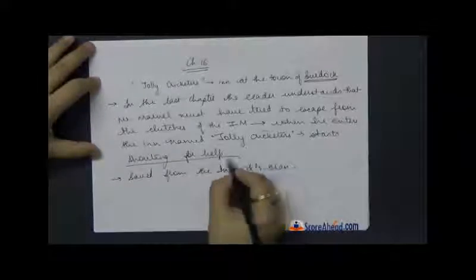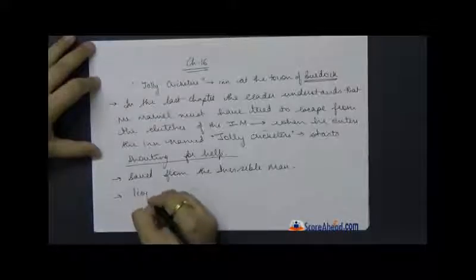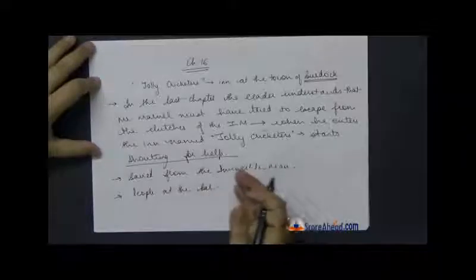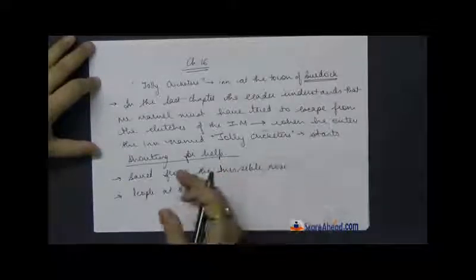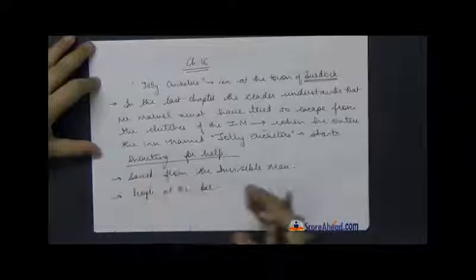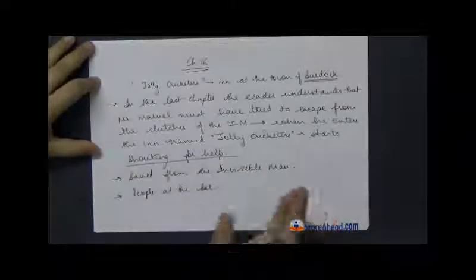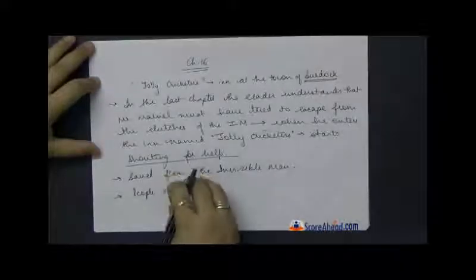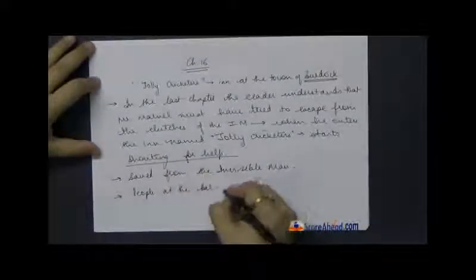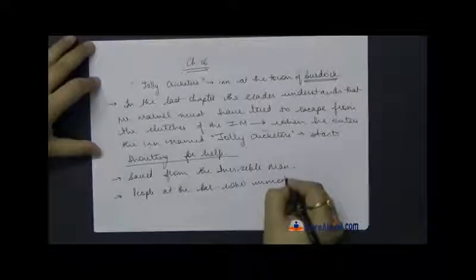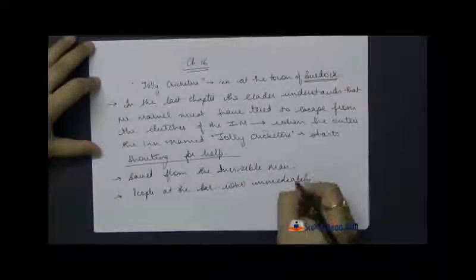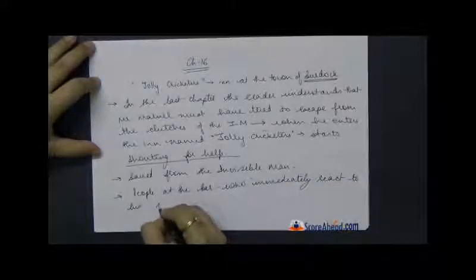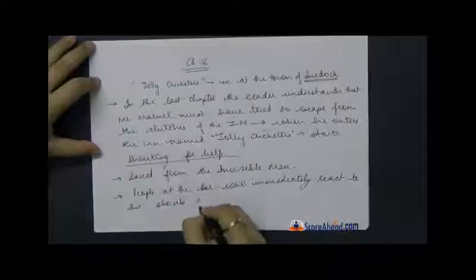So he shouts for help and people at the bar, there are a few people who are at the bar. The author would tell you that there is the barman and there are a few clients, there is a taxi driver, there is an American. You don't need to know all those details. There are a few people at the bar who immediately react to his shouts for help.